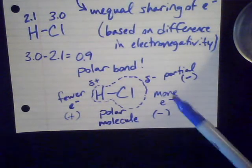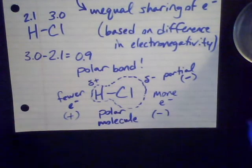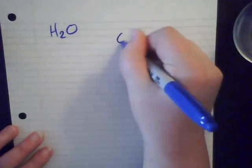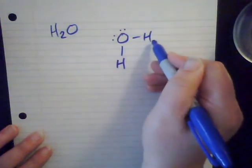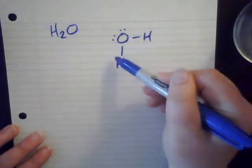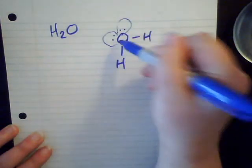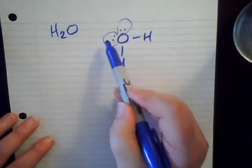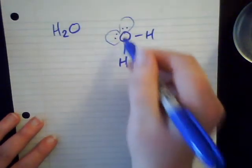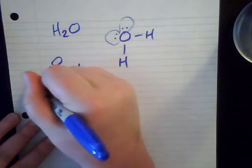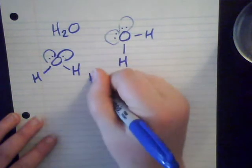It gets a little more complicated when we look at other types of molecules. Let's look at water. Water is H₂O. The oxygen has two lone pairs and two bonding sites, so it can share an electron here with one hydrogen and here with the other hydrogen. Now my oxygen has a full octet. I have these lone pairs — kind of Mickey Mouse ears. So I have four electron pairs around a central atom, which means I have tetrahedral VSEPR geometry, giving me a bent molecule. Water is bent.